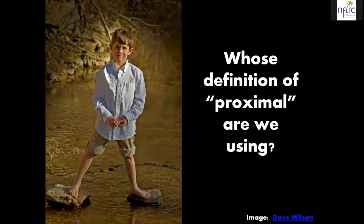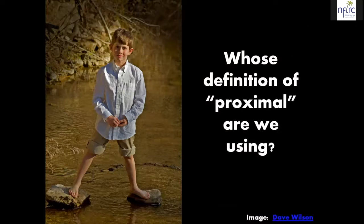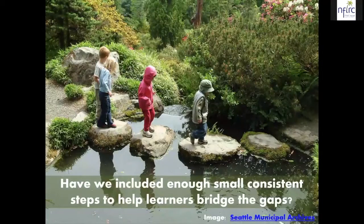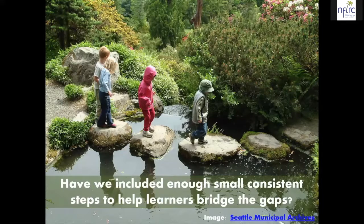As an example: whose definition of proximal are we using? If proximal means close to the level of ability of the learner, what proximal is for a small child would be very different than what proximal might be for an adult who's a seasoned rock climber. When thinking about providing support to learners, we need to ask ourselves: have I included enough small, consistent steps to help learners bridge the gap from one side to the other so that they can comfortably cross?